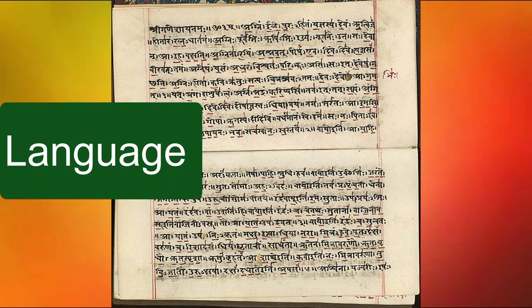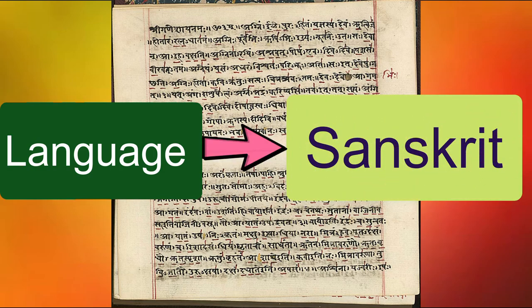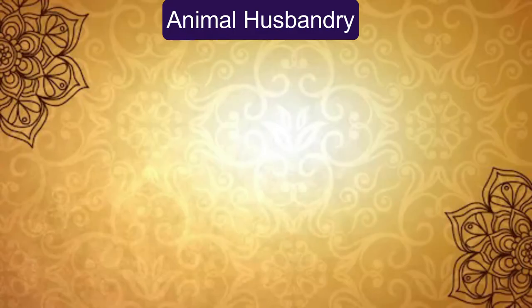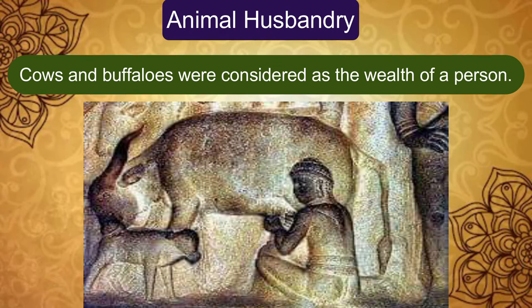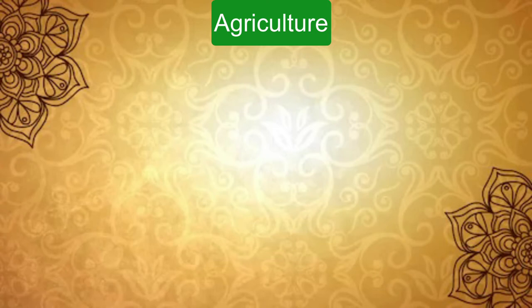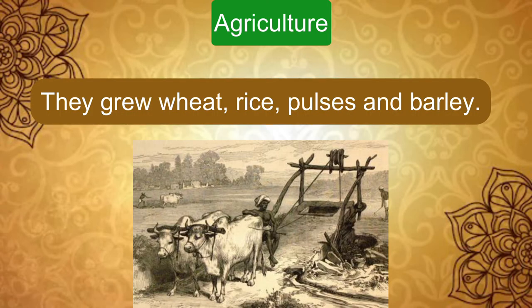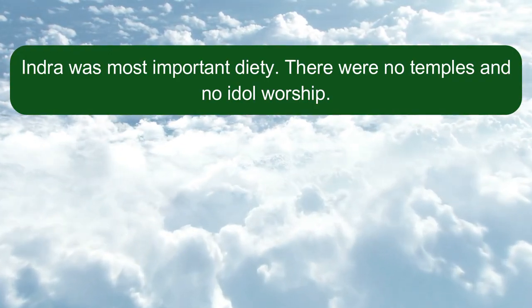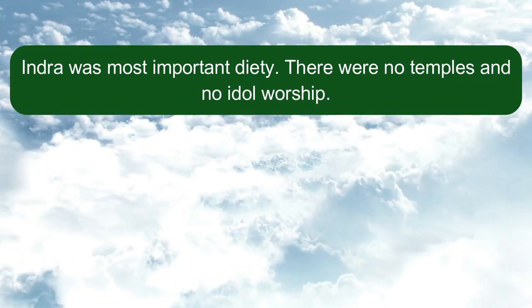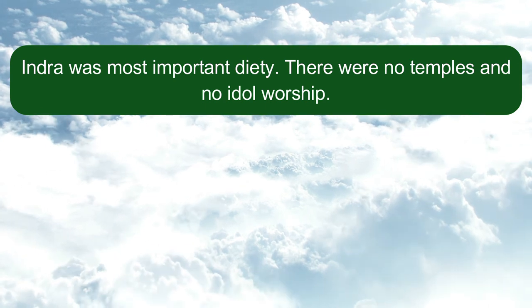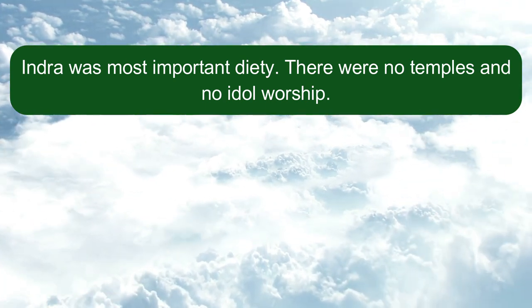The language of that period was Sanskrit. Regarding animal husbandry, cows and buffalos were considered the wealth of a person. In agriculture, they grew wheat, rice, pulses, and barley. Indra was the most important deity. There were no temples and no idol worship.